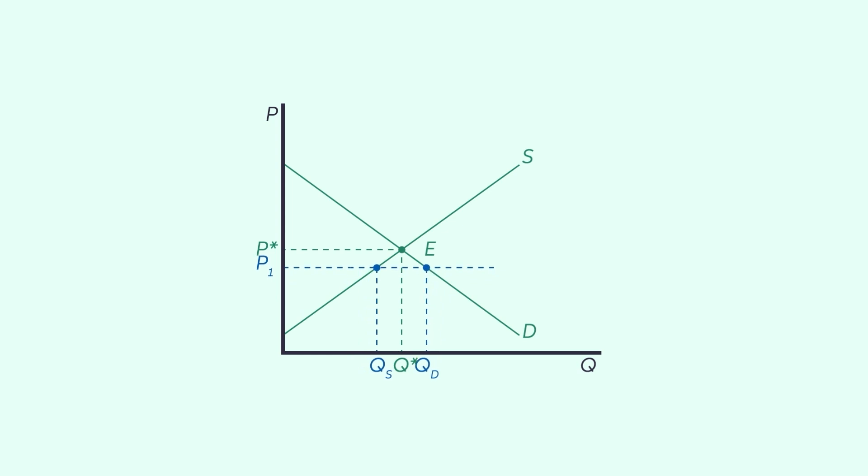The sellers will increase the price which leads to the quantity demanded decreasing. Eventually, quantity demanded and quantity supplied will meet at the equilibrium point E as in the previous case.